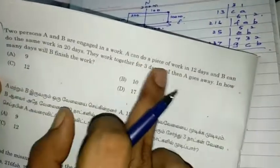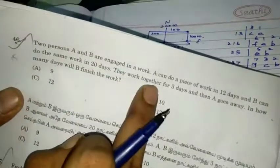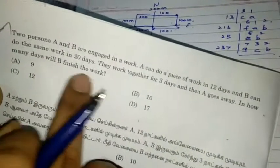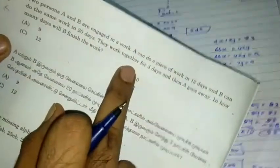Then, 2 persons A and B are engaged in your work. A can do a piece of work in 12 days. B can do the same work in 20 days. They work together for 3 days. And then, A goes away. In how many days will B finish the work? So, see. I will cut up. So, A is now 12. I will tell you the equation update form. B can do the same work in 20 days.